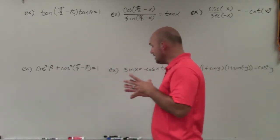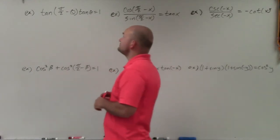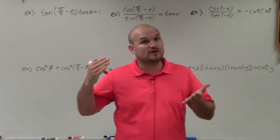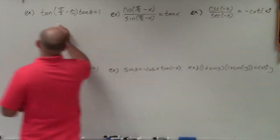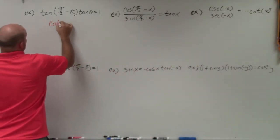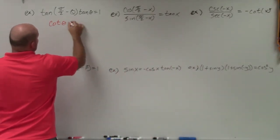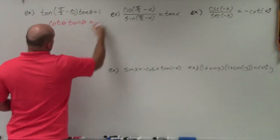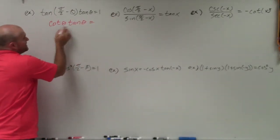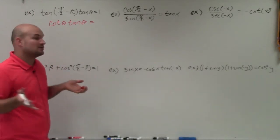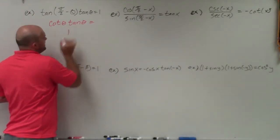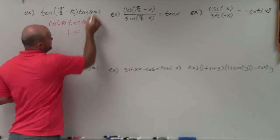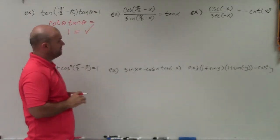The first example has tangent of pi halves minus theta, which automatically triggers the co-function identity. That gives us cotangent of theta, times tangent of theta, which equals 1. We know that cotangent and tangent are reciprocal functions of each other, so when you multiply them they equal 1. Therefore, 1 equals 1, and the identity is verified.